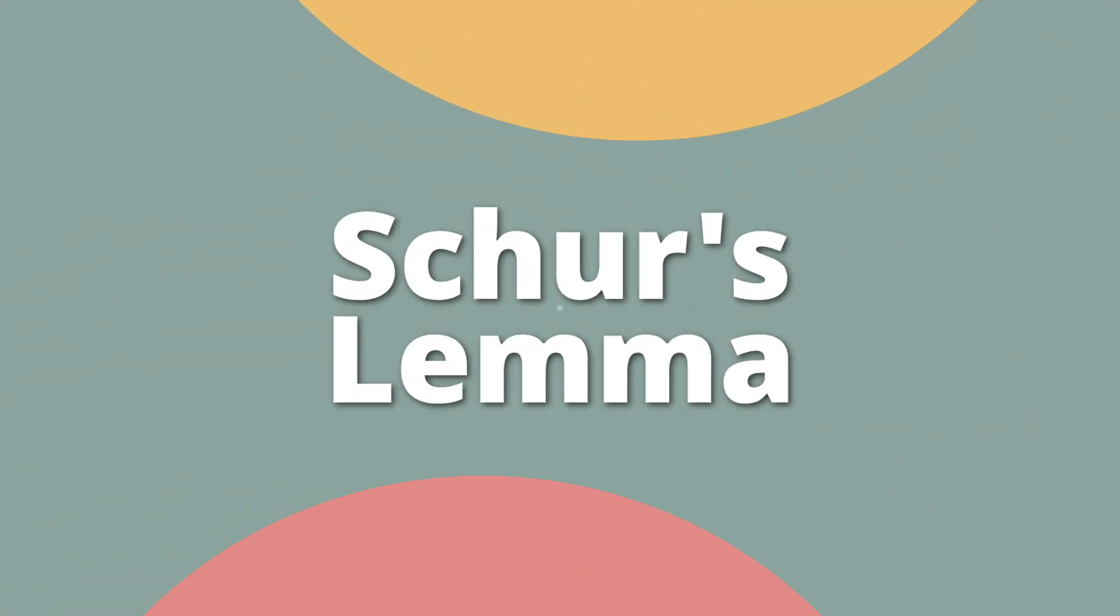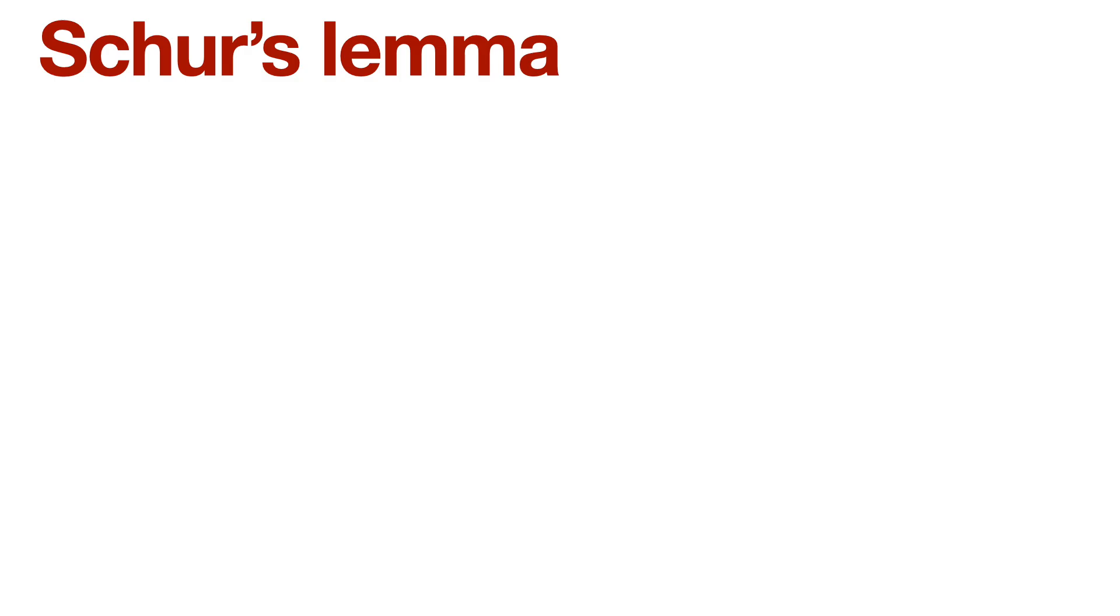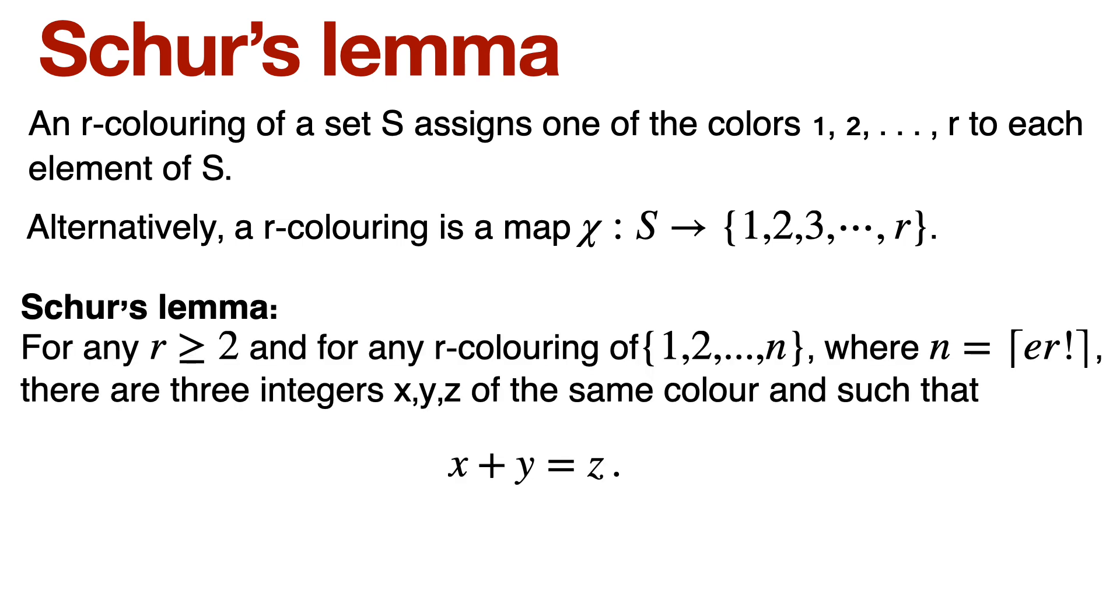Here is the statement. Before that, though, let me just first of all clarify a definition. An r coloring of a set is basically a map chi from S to the set 1 to 3 up to r. Schur's lemma states the following. All it's saying is that if you take r colors and you take sufficiently large numbers n, the numbers from 1 to 3 n can always be, no matter how you color it, rather, you can always find three integers x, y, z of the same color so that one is the sum of the other two.